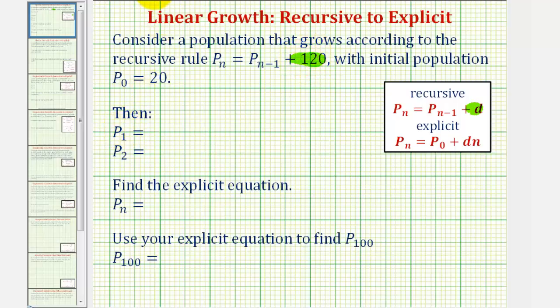We first want to find P₁. When finding P₁, notice n is equal to one here as well as here. So P₁ is equal to P₁₋₁, that'd be P₀ plus 120. But we're given P₀ equals 20, so P₁ is equal to 20 plus 120 which is equal to 140.